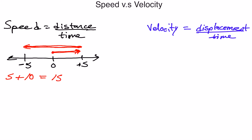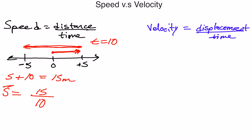Let's say that distance is in meters, so we went 15 meters, and it took 10 seconds. My speed equals 15 divided by 10, giving us an average speed of 1.5 meters per second.